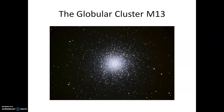This screencast accompanies a lecture covering the local group and beyond. Here's a nice picture of M13, a globular cluster. Globular clusters are distributed around the center of the Milky Way, roughly in a spherical halo. By mapping out the positions of globular clusters, the American astronomer Harlow Shapley was able to determine the basic structure of the Milky Way and the sun's place within it. M13 is in the constellation of Hercules — a region of several hundred thousand stars crammed into a volume of maybe 50 light years or so wide.